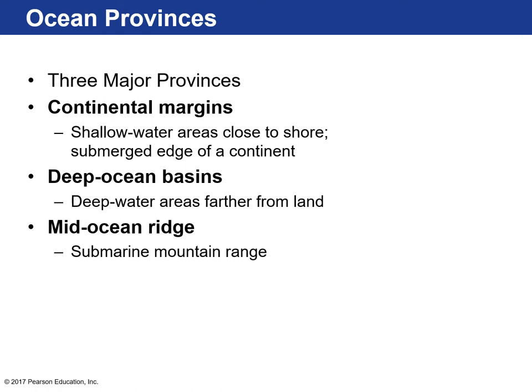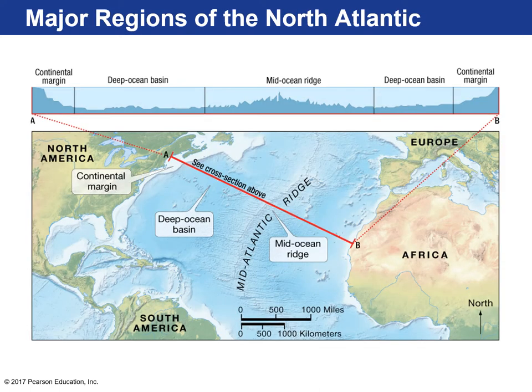As a result of all that emerging technology, three major provinces came into light in our ocean basins. Continental margins are shallow-water areas close to land — essentially a portion of the continent that happens to be submerged under the ocean. There are also deep ocean basins, far away from land, and mid-ocean ridges, which are a submarine mountain range. Let's jump to the Atlantic Ocean and look at the Atlantic Ocean basin.